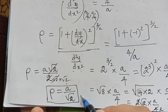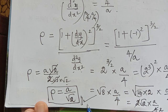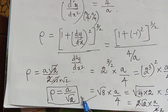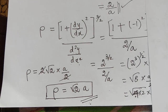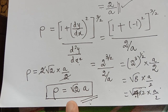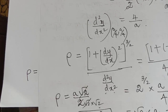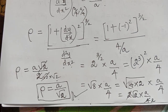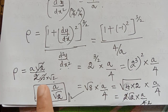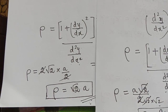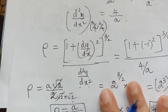So to summarize: at the point (a/2, a/2) the radius of curvature is a√2, and at the point (a/4, a/4) the radius of curvature is a/√2. Hope you have understood this problem. Thank you.